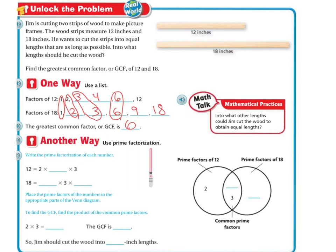Another way is to use prime factorization. So write the prime factorization of each number. So 12 equals 2 times 2 times 3. And 18 equals 2 times 3 times 3. So this takes us back to our little factor trees when we're breaking it apart, right? 2 and 6. This is the end. And I have 3 and 2. So it just takes you back to the factor trees.